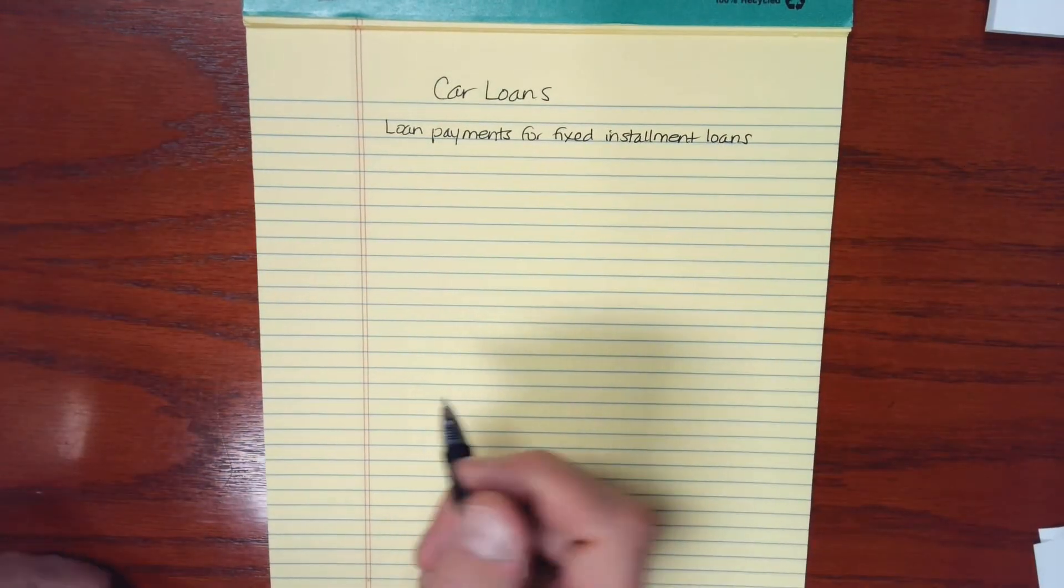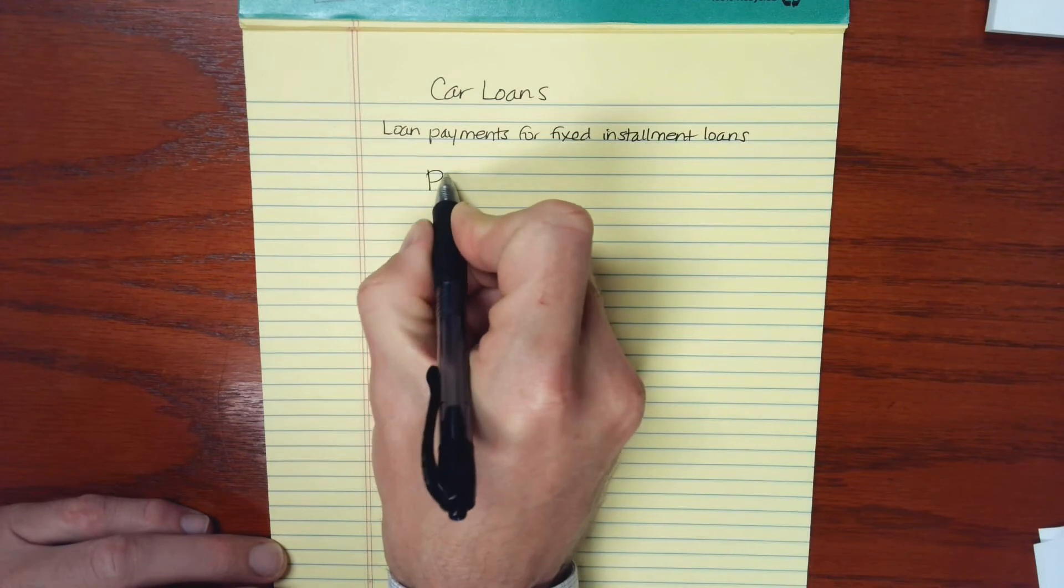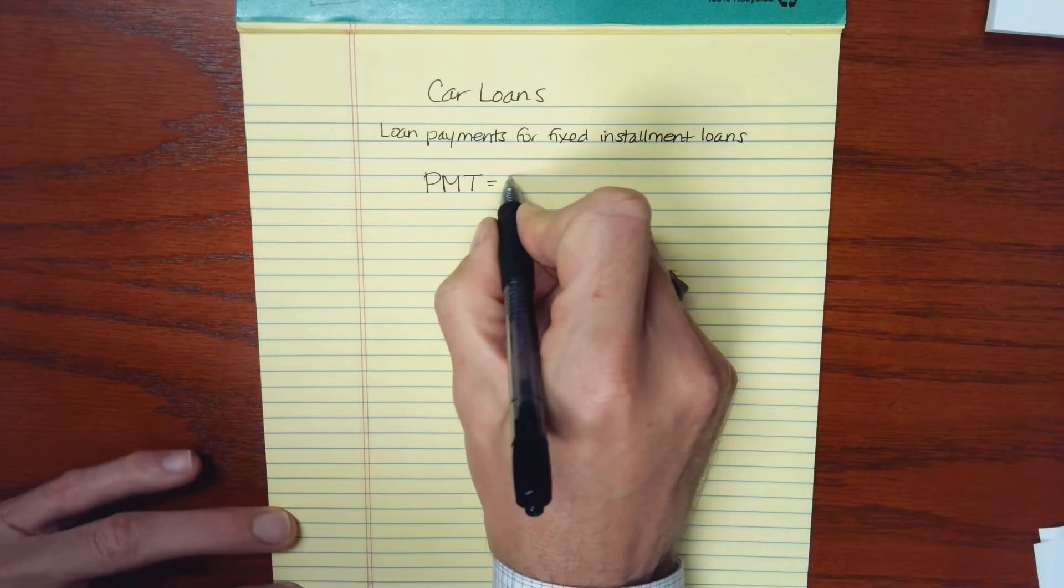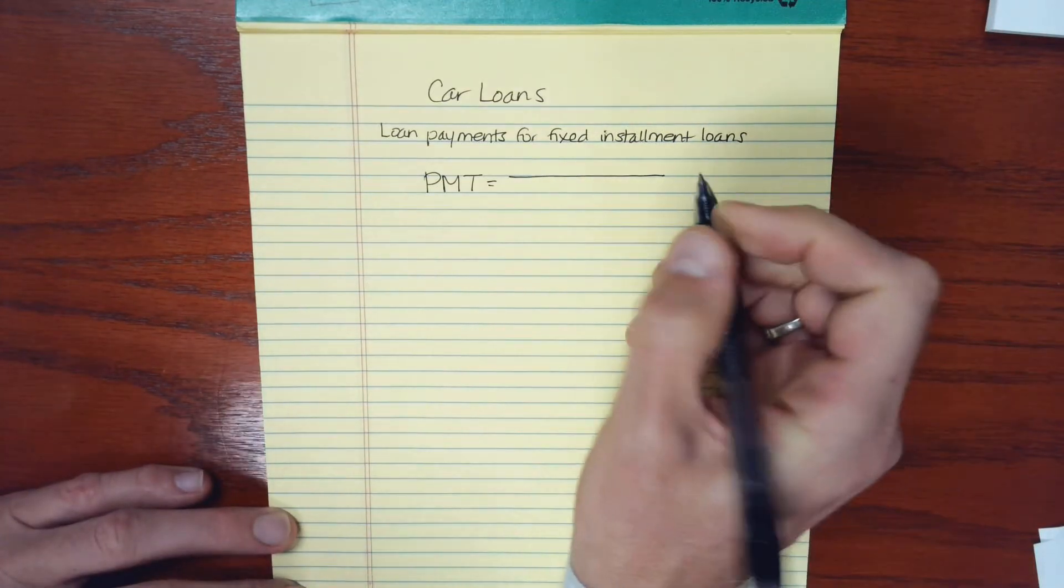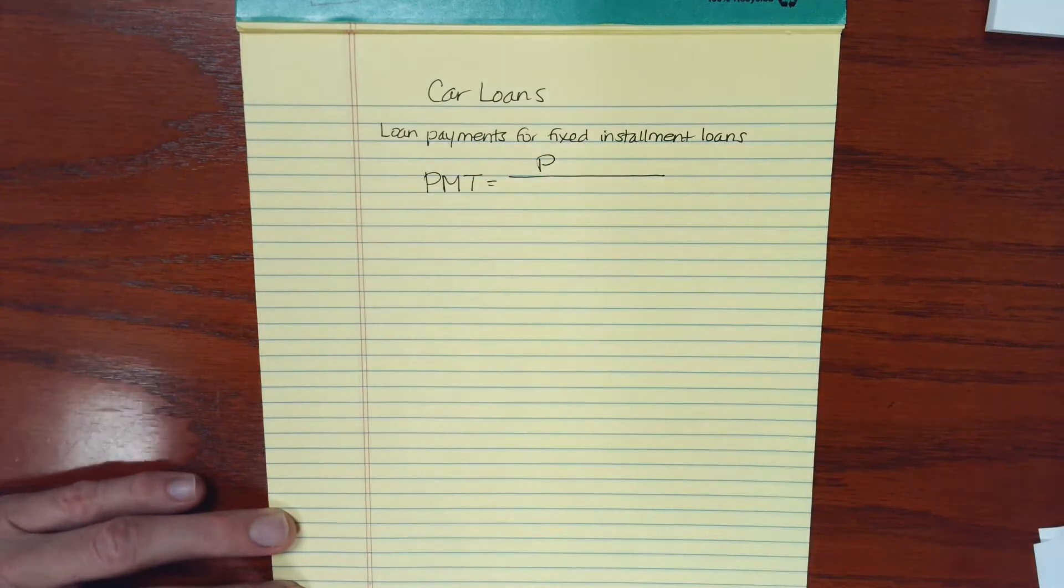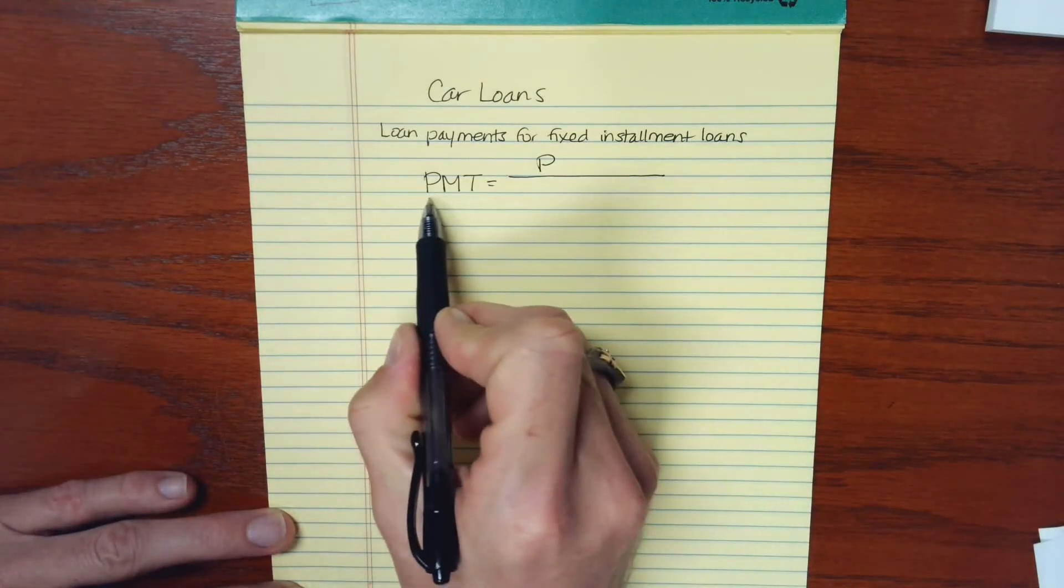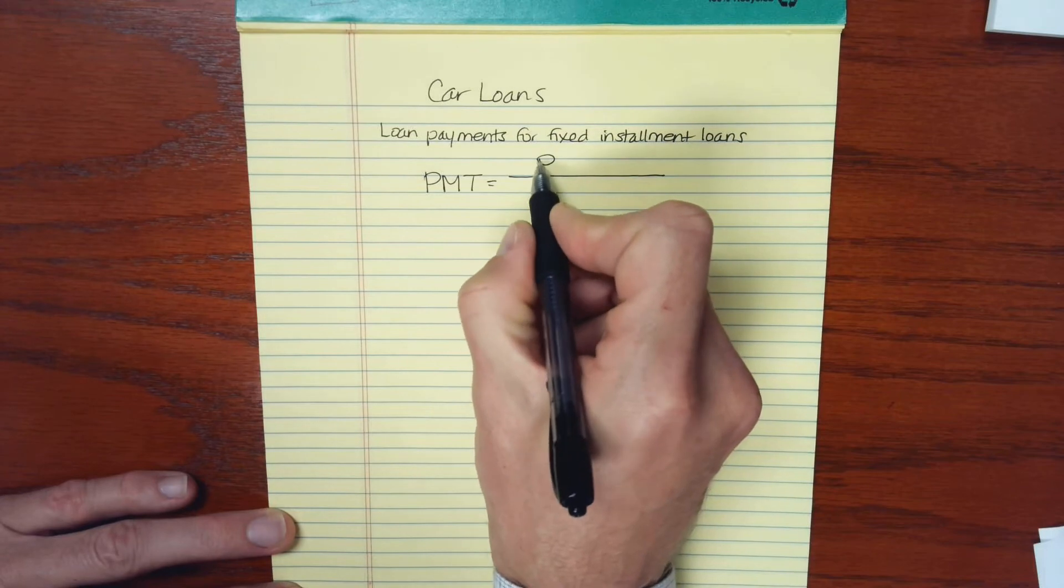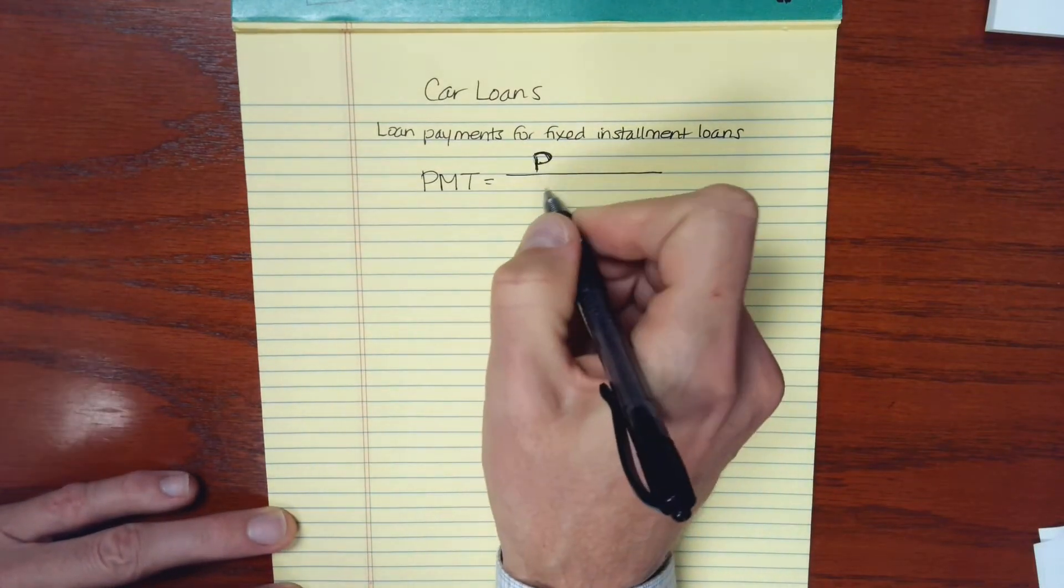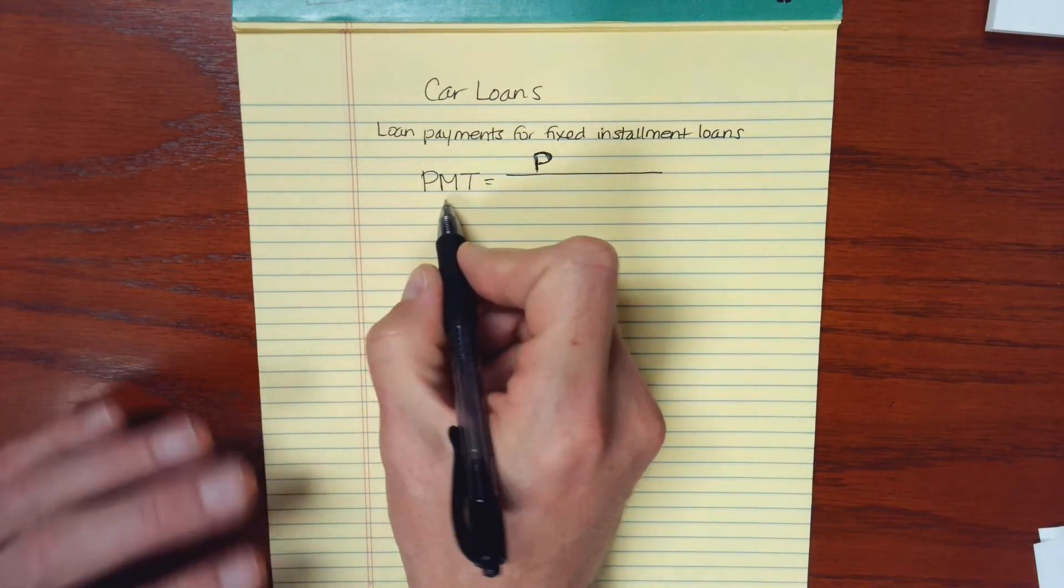So the formula that we use to calculate loan payments, and I'm going to use PMT to represent the payments, and the reason is this formula involves a symbol for principal, and for that we're using a capital P. So this would be the monthly or periodic payment, and P is the principal. Usually this is the initial amount of the loan.